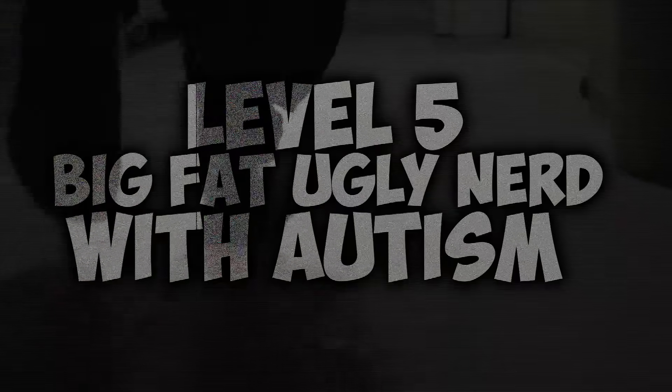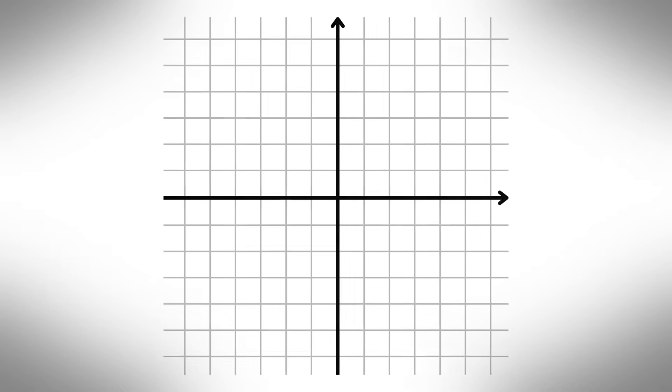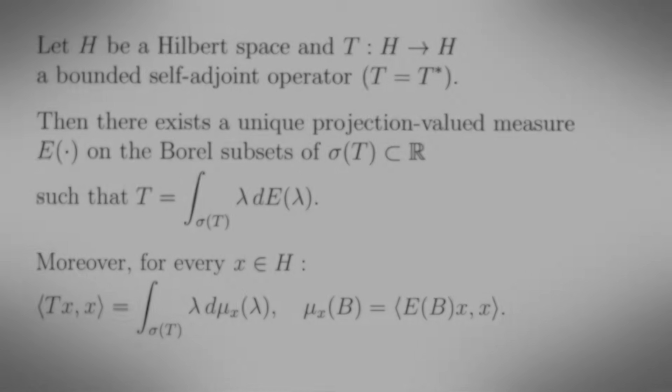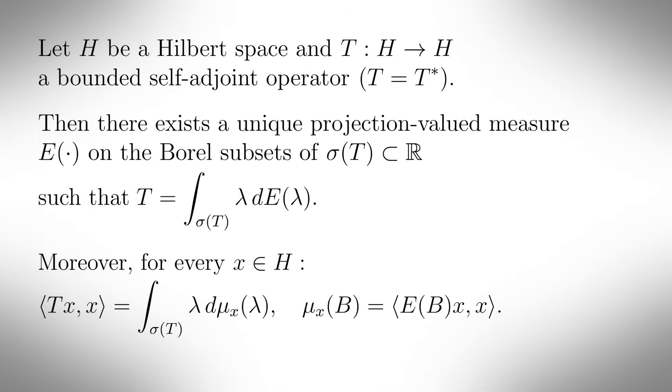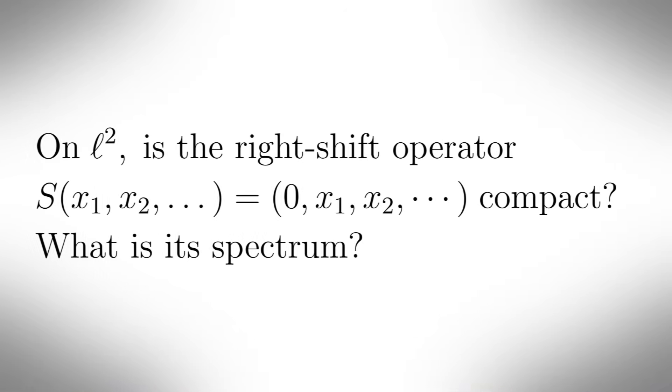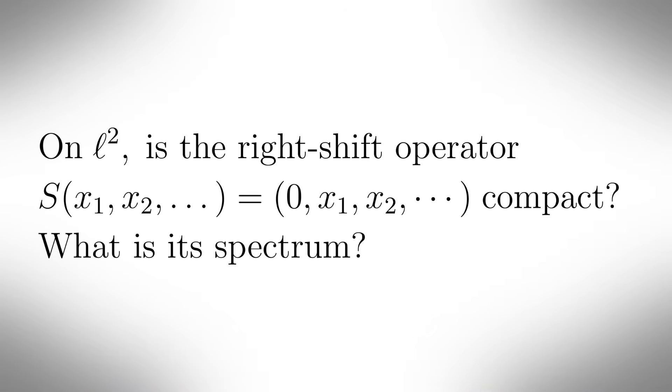Level 5, big fat ugly nerd with autism. On this level you'll start to deal with infinite dimensional spaces, which is actually a lot easier than it sounds. First imagine one dimension, then imagine two dimensions, and now imagine infinity of them. On this level you'll learn about Hilbert spaces, which generalizes Euclidean geometry into infinite dimensions, the spectral theorem for self-adjoint and normal operators on Hilbert spaces, and compact operators and their spectral properties, which behave like finite matrices in many ways, only they have discrete, non-zero spectrum, which accumulate only at zero. Here's a question to see if you've mastered level 5, you big fat ugly nerd with autism.